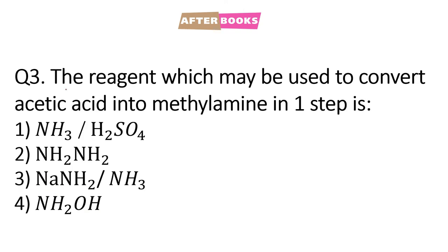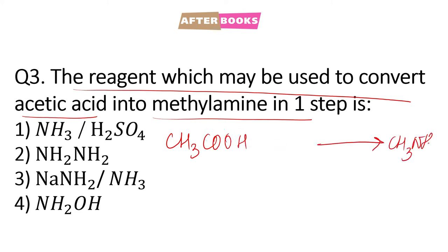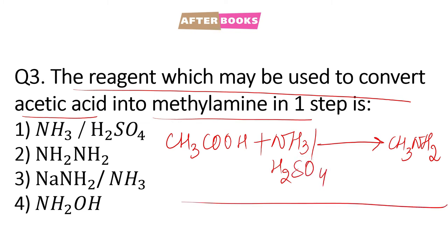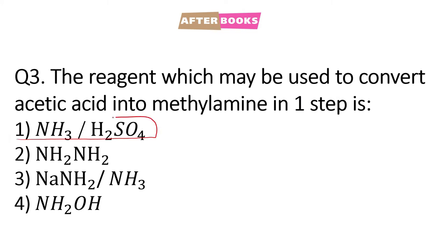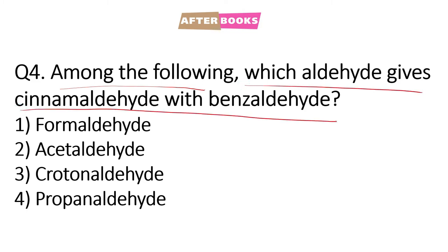Question number 3: the reagent which may be used to convert acetic acid into methylamine in one step. Acetic acid, that is CH3COOH, ko humne convert karna hai into methylamine, which is CH3NH2. Toh agar hum isko NH3 along with H2SO4 ke saath treat karenge toh ek hi step mein it will convert into methylamine. So the correct option is option number 1.